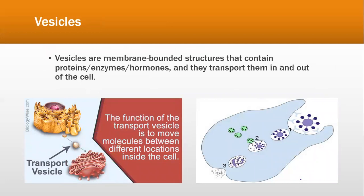Vesicles are membrane-bounded structures that contain proteins, enzymes, and hormones, and they transport them in and out of the cell. Vesicles are transport structures — molecules are packaged inside them so they can enter and exit the cell. The function of the transport vesicle is to move molecules between different locations inside the cell.